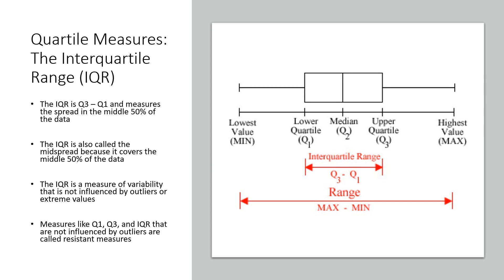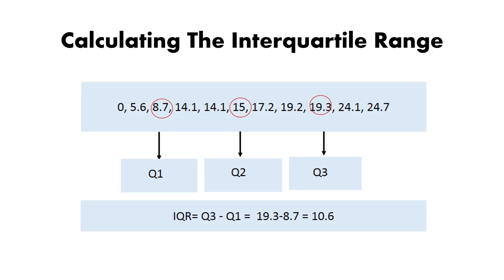The interquartile range (IQR) is calculated by subtracting Q1 from Q3: IQR = Q3 − Q1. The IQR covers 50 percent of the data and measures variability without being influenced by outliers. In this example, subtracting Q1 from Q3 gives an interquartile range of 10.16 (or the calculated value from the example data).